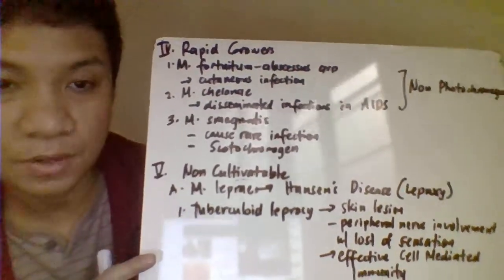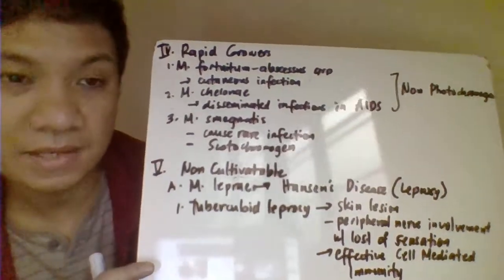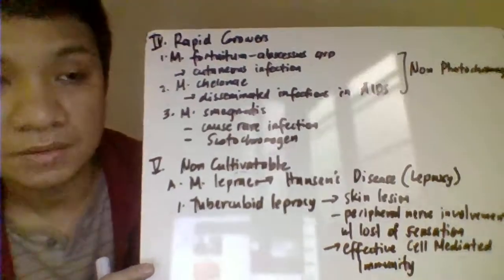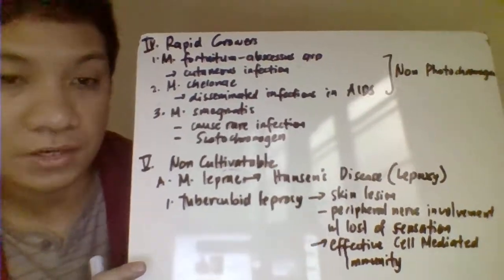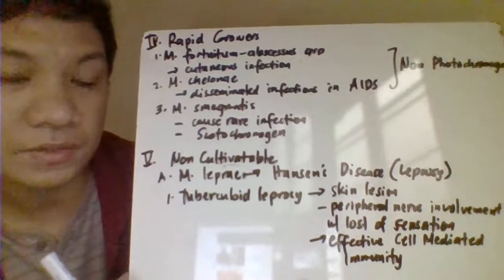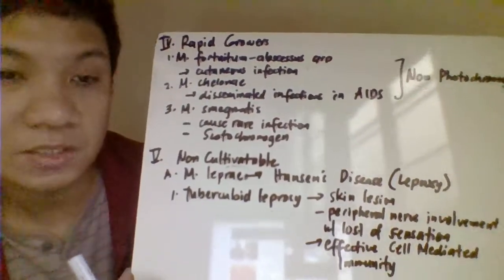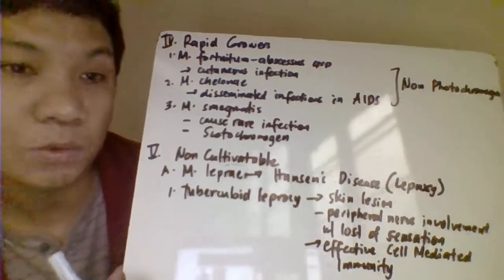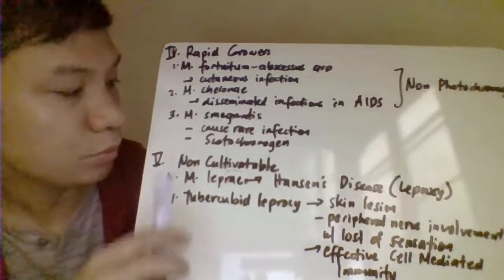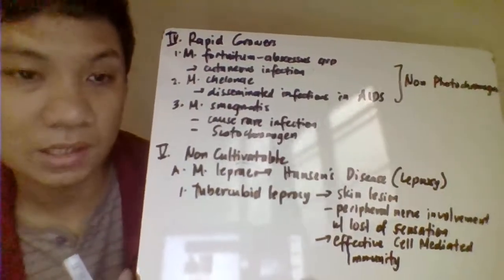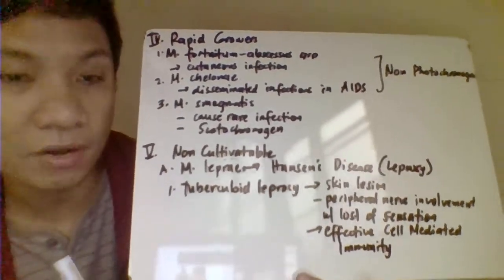Rapid-growing mycobacteria grow in less than 7 days. M. fortuitum-abscessus group causes skin and cutaneous infections. M. chelonae causes disseminated infections in AIDS patients. Both fortuitum-abscessus and chelonae are non-photochromogens. M. smegmatis is a scotochromogen — producing pigment only in the dark — and rarely causes infection.